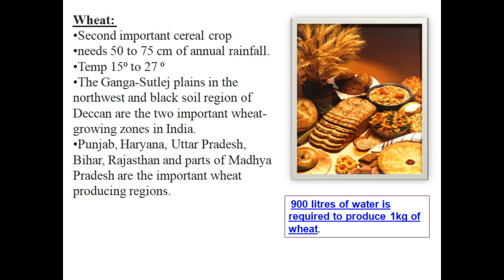This region is not too humid, night temperatures are not too high, and winters are experienced here — wheat is a winter crop. Punjab, Haryana, Uttar Pradesh, Bihar, Rajasthan, and parts of Madhya Pradesh are important wheat producing regions. Uttar Pradesh is number one in wheat production, followed by these other states.